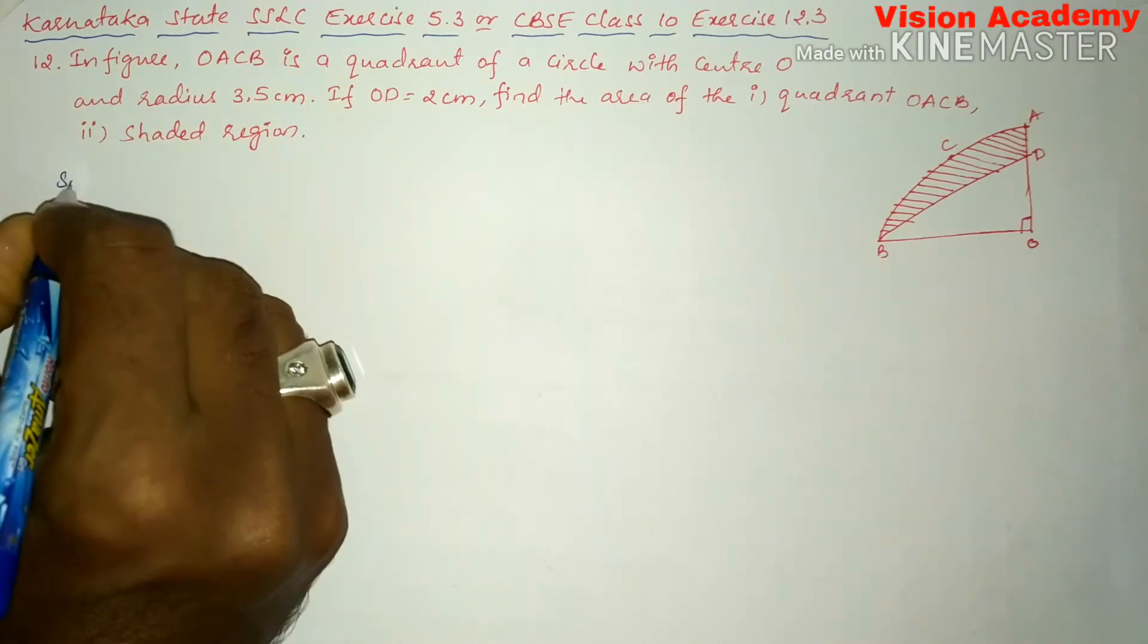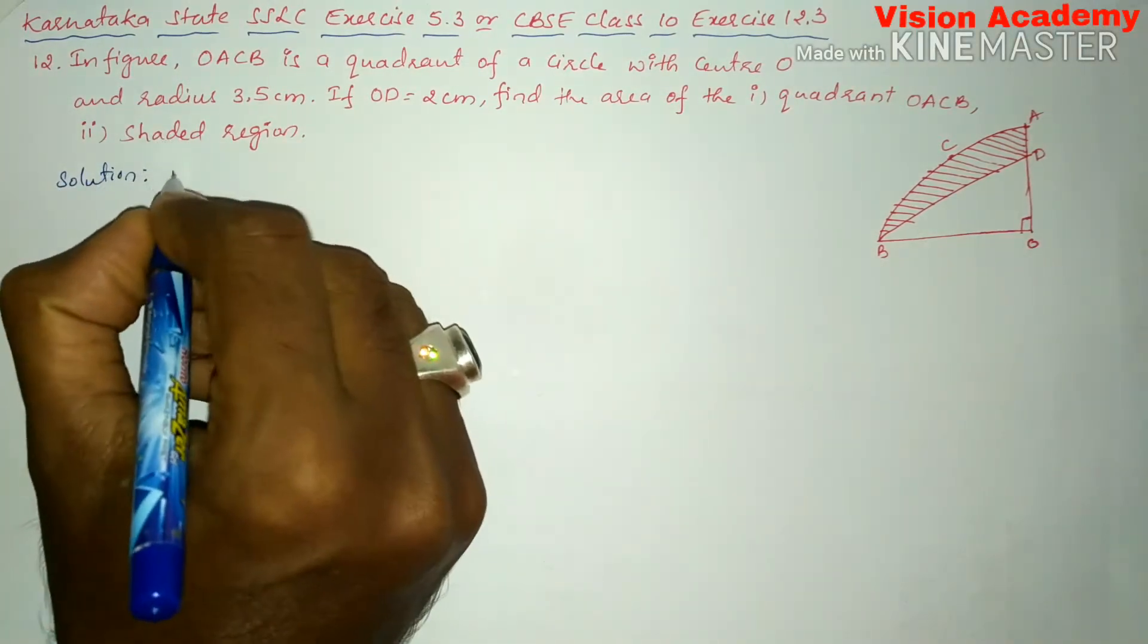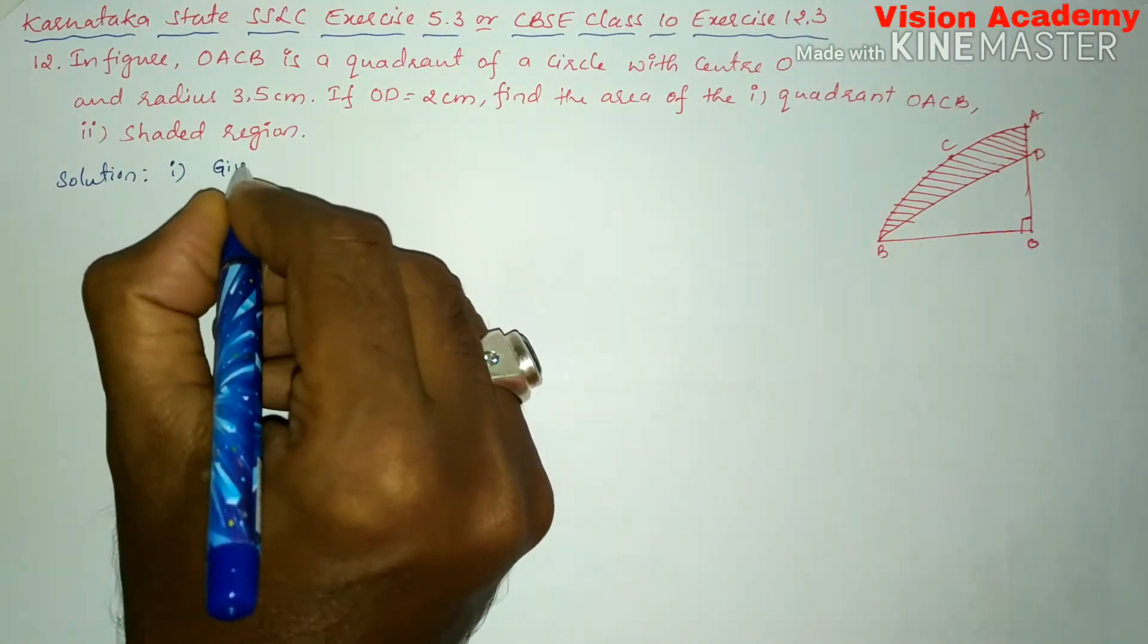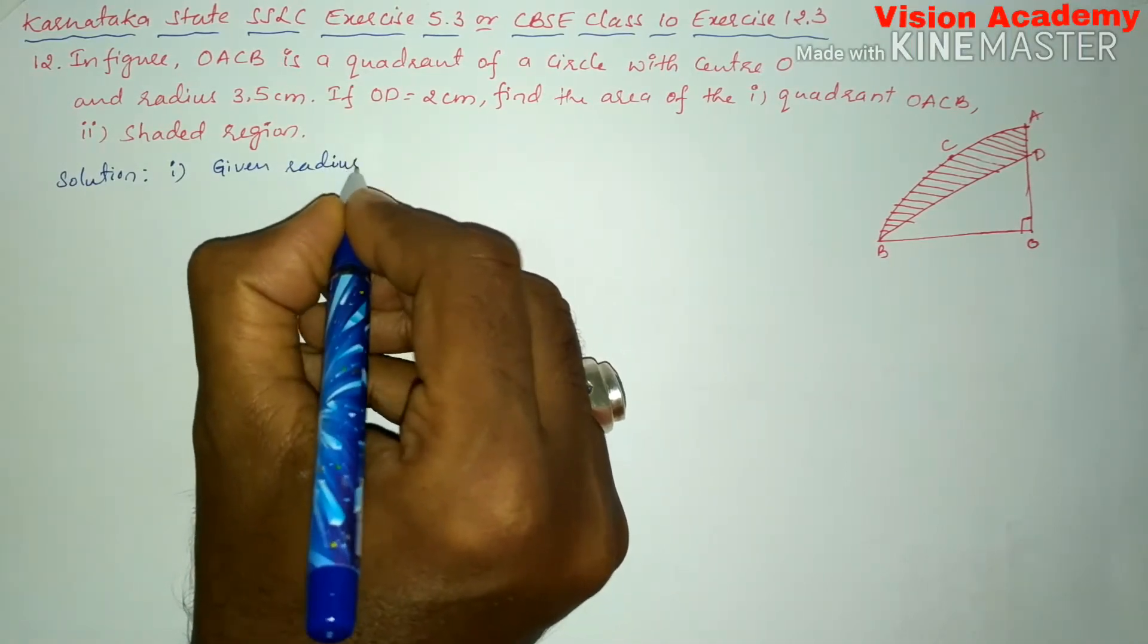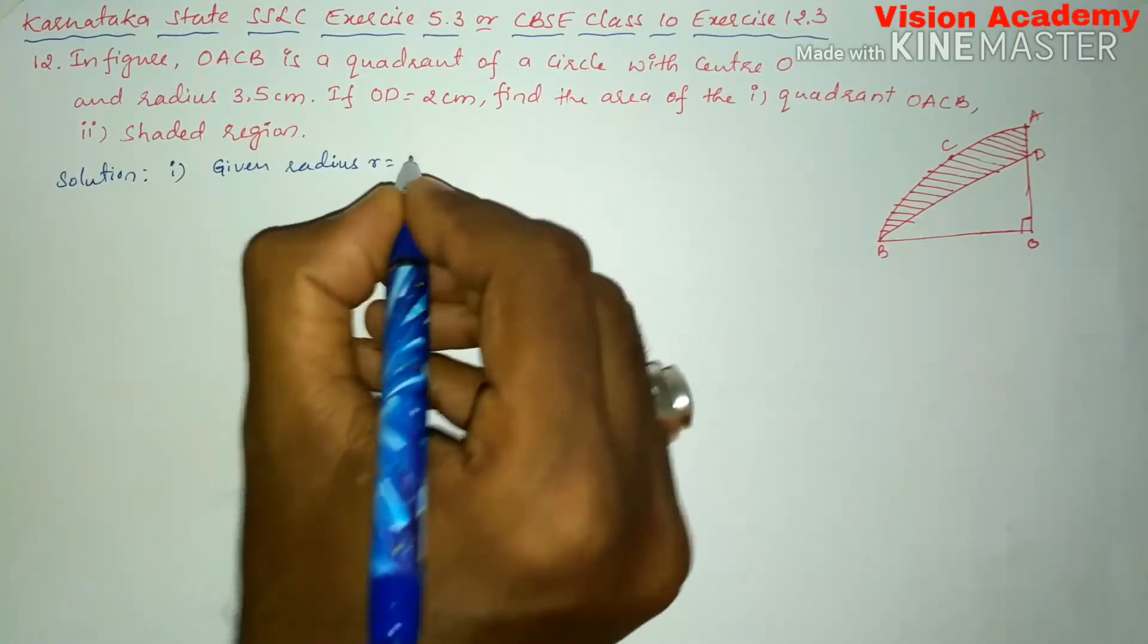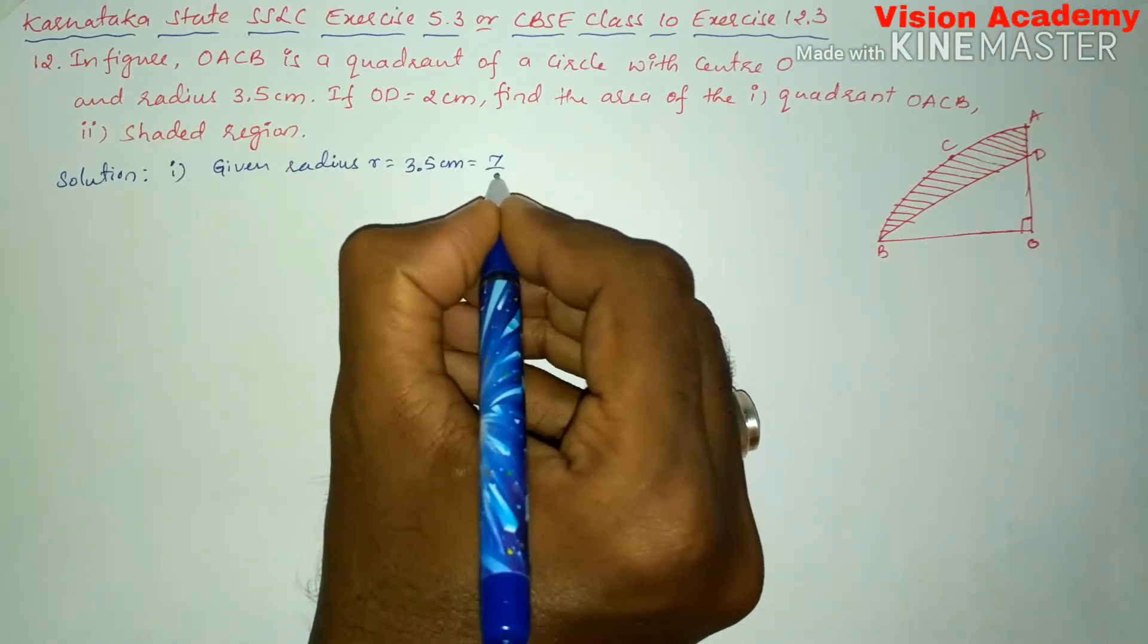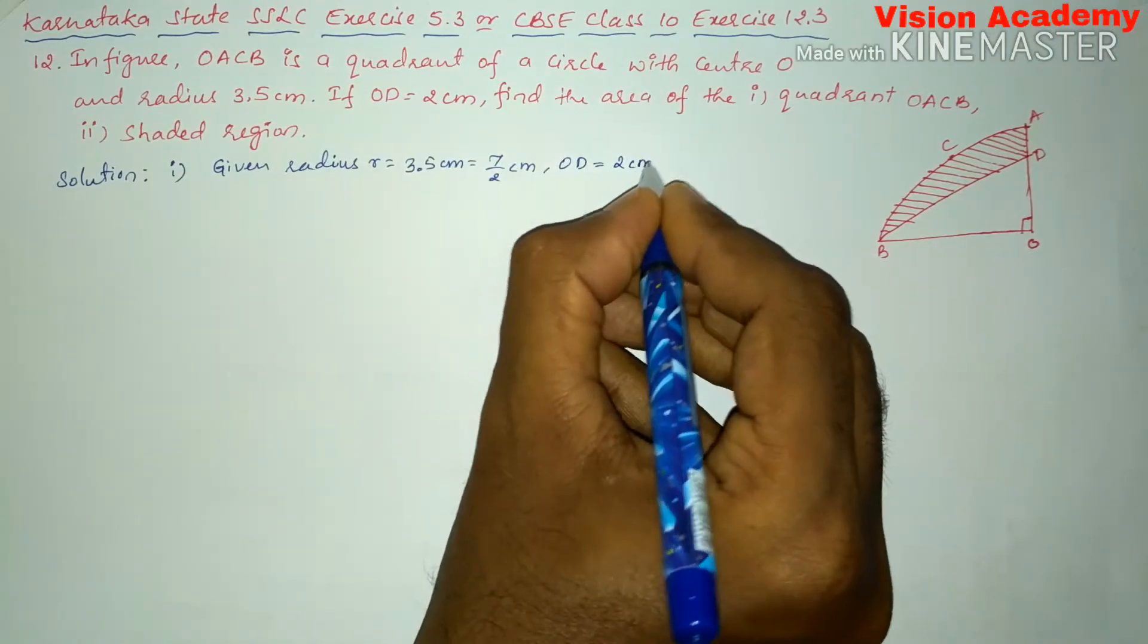Now, let us find the solution for the given problem. First, we will write given: radius R is equal to 3.5 cm, which can be written as 7 divided by 2 cm, and OD is equal to 2 cm.